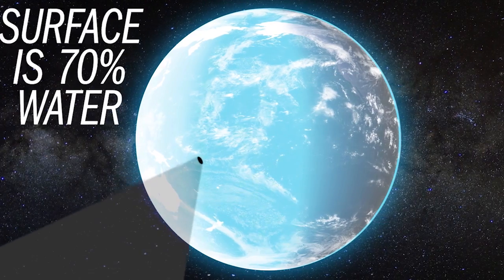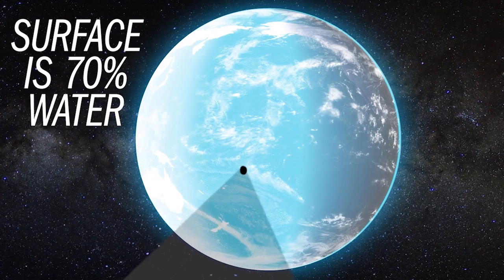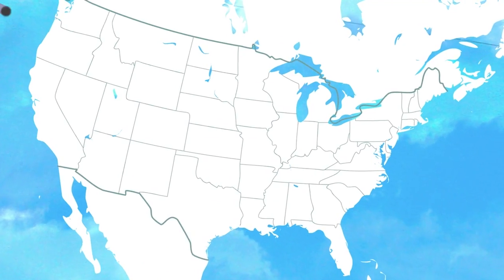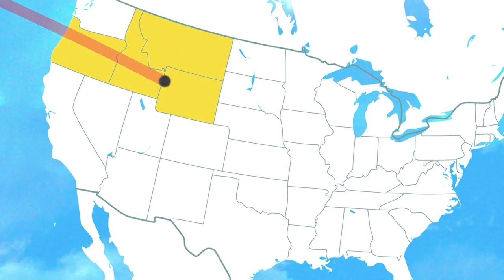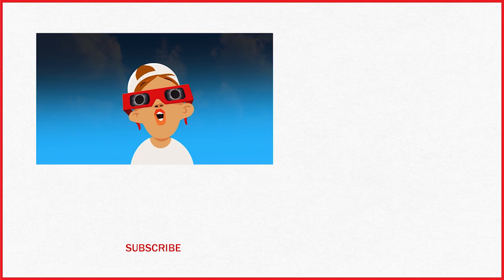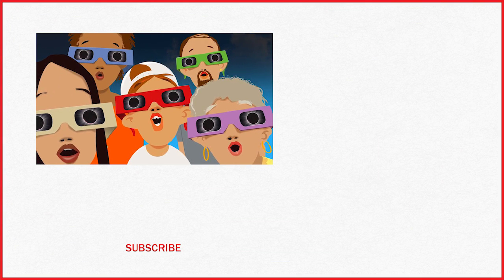Even then, the narrow band of totality usually tracks over water or away from population centers. That's why this total solar eclipse is so special. As it cuts a path of darkness across the U.S. this August 21st, it could be the most viewed total eclipse in history, and for many, the experience of a lifetime.